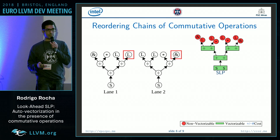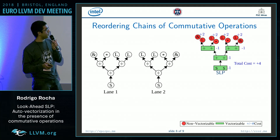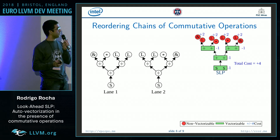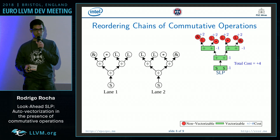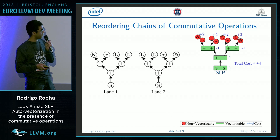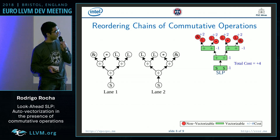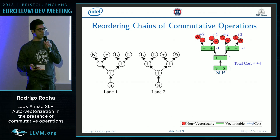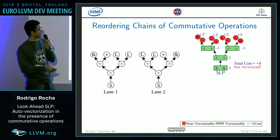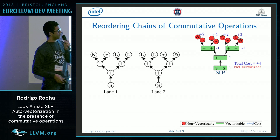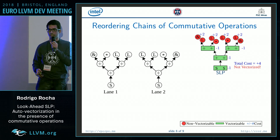If we apply the cost model now, the cost for inserting these scalar values into the vectors is worse than the benefits of vectorizing the code. Because the final cost is plus four, this code will not be vectorized at all.